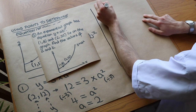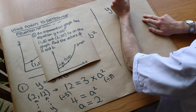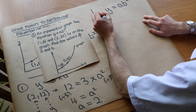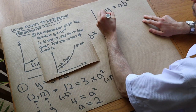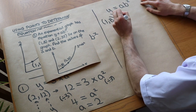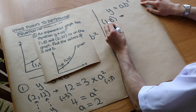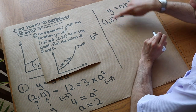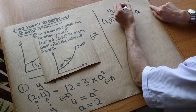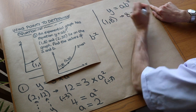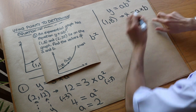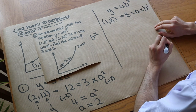We write out the equation y equals a times b to the power of x. Using the point (1, 8), since it lies on the graph it must satisfy this equation. Substituting in, y which is 8 equals a times b to the power of x, which is 1. So our first equation is 8 equals a times b to the 1.